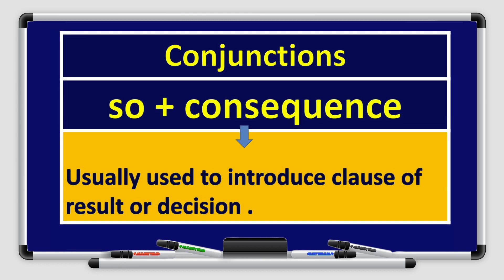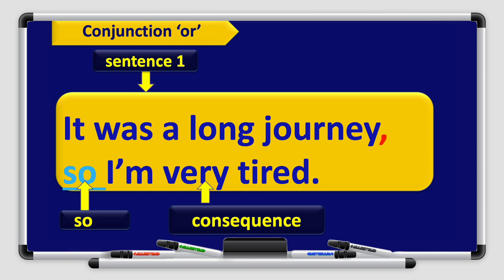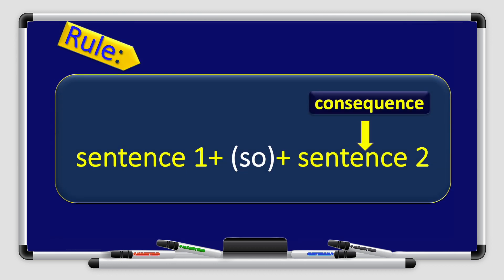Alright boys and girls, we have the conjunction 'so' plus consequence. 'So' is usually used to introduce a clause of result or decision. Example: It was a long journey, so I'm very tired. Why am I tired? Because of the long journey. As a result of this long journey, I am very tired. The rule: Sentence 1, plus the conjunction 'so', plus sentence 2, which is the consequence.